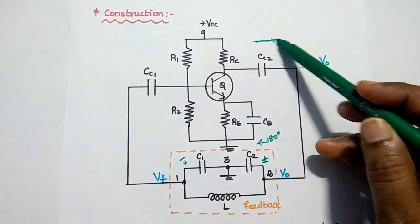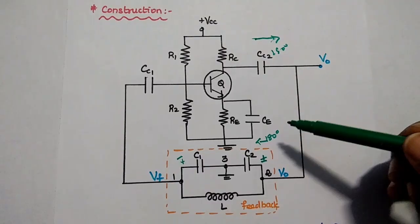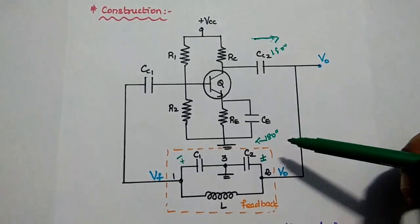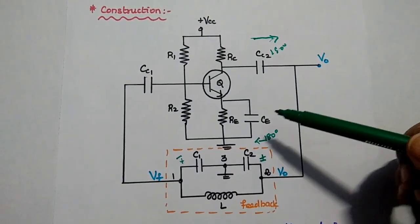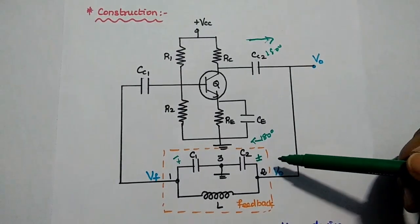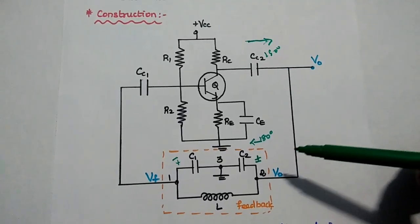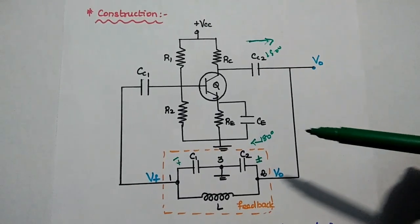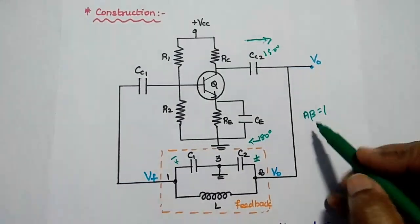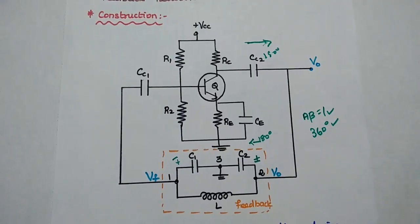In CE configuration, the transistor produces a 180-degree phase shift between input and output. Therefore, the total phase shift in the circuit is 360 degrees. If the feedback is adjusted to get A·β equal to 1, then this circuit can act as an oscillator. Based on the Barkhausen criterion, A·β = 1 and total phase shift = 360 degrees — both conditions are satisfied.